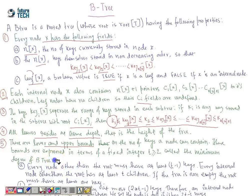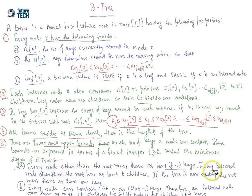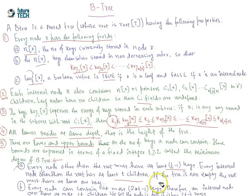The B-tree properties state: every node other than the root must have at least T minus one keys; every internal node other than the root has at least T children — meaning if there are T minus one keys in the internal node there are T children; if the tree is non-empty, the root must have at least one key; every node can contain at most two T minus one keys; therefore an internal node can have at most two T children. A node is full if it contains two T minus one keys.